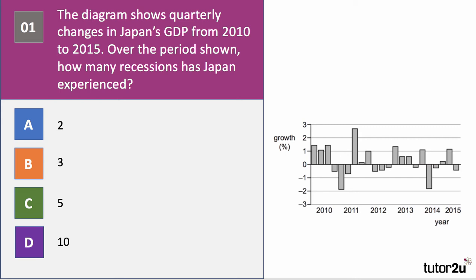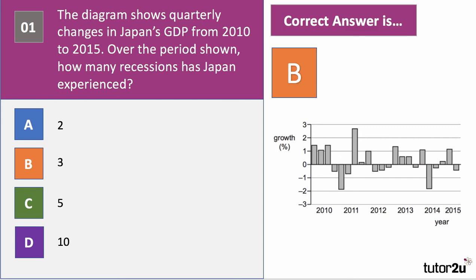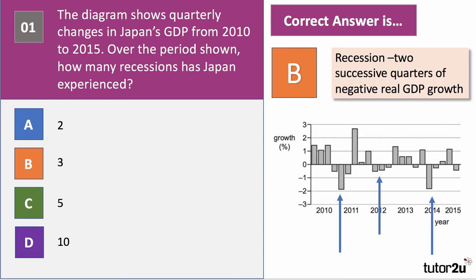The data shows the quarterly percentage growth in GDP for Japan — quite volatile as you can see from quarter to quarter. But how many recessions has Japan experienced? The correct answer to question one is B: there have been three recessions in Japan. A recession is conventionally defined as two successive quarters of negative GDP growth, so we eliminate single-quarter dips followed by an upturn. There were three recessions as shown in the diagram.